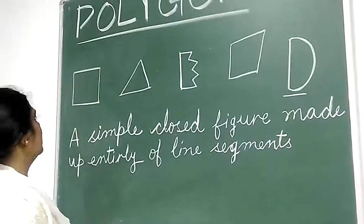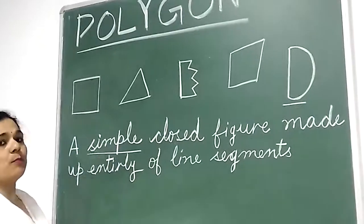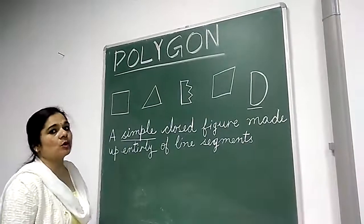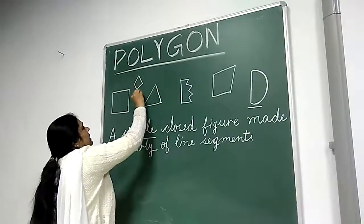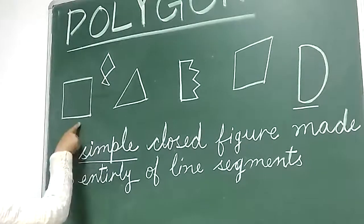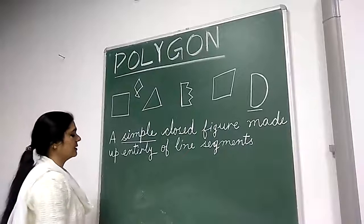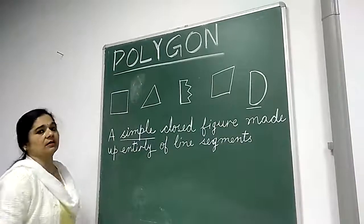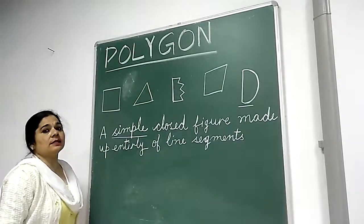Now, children, first I will emphasize this word: simple. A polygon is a simple figure. Simple figure means it doesn't cross itself. See this figure? This figure is made up by line segments but it is crossing itself. But this figure, this figure, and this figure — these are not crossing themselves. So these figures are simple figures. So a polygon is a simple figure which does not cross itself.